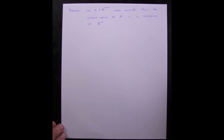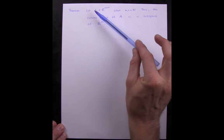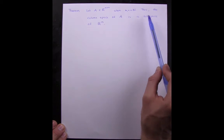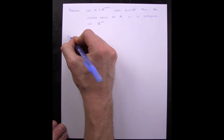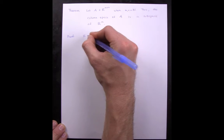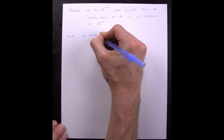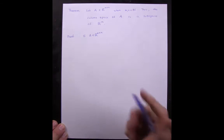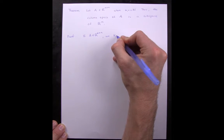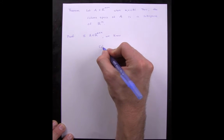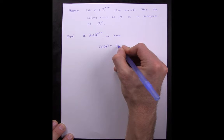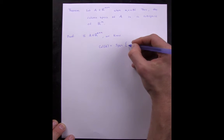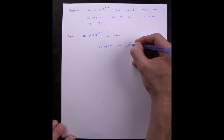Welcome back. In this video, we are going to discuss a theorem that classifies the column space of a given matrix as a subspace of ℝᴹ. If we let our matrix A have M rows and N columns, we know by definition that the column space of A, denoted Col(A), is just the span of the columns of A.